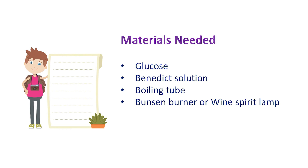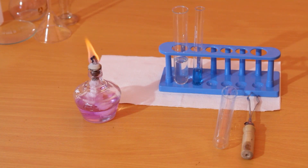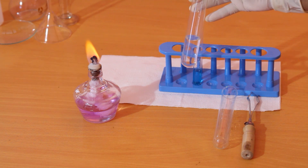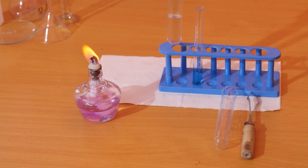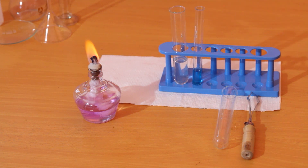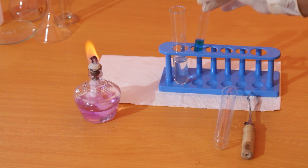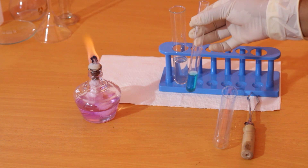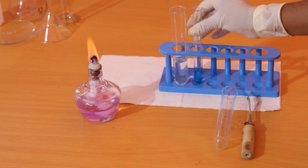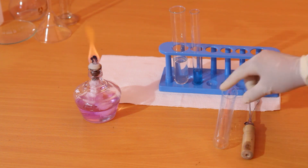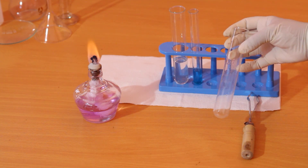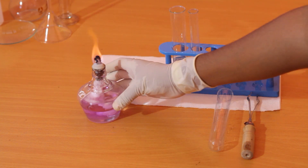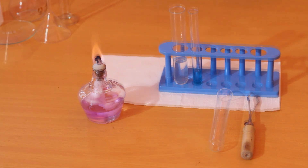Let's see how this practical is done. This is the colorless glucose solution. This is the Benedict solution — it is blue in color. This is the boiling tube we are going to use. And this is the wine spirit lamp; we use it to provide heat.